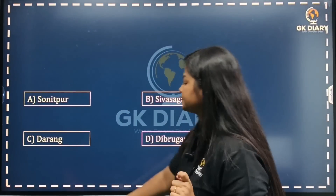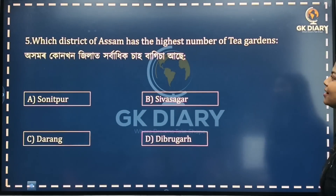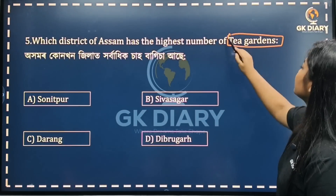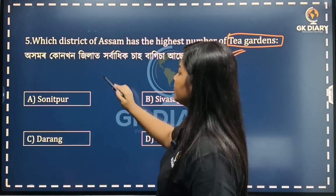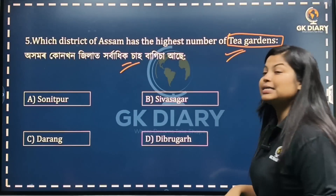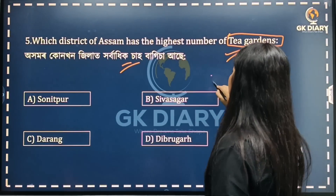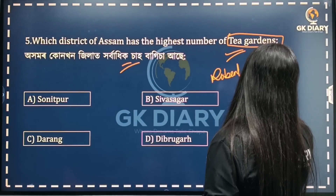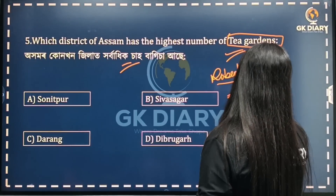Next question: Which district of Assam has the highest number of tea gardens? This is a highest number of tea gardens question. Related to this, the name Robert Bruce comes up — he is associated with the discovery of tea in Assam. The name Moniram Dewan is also relevant.